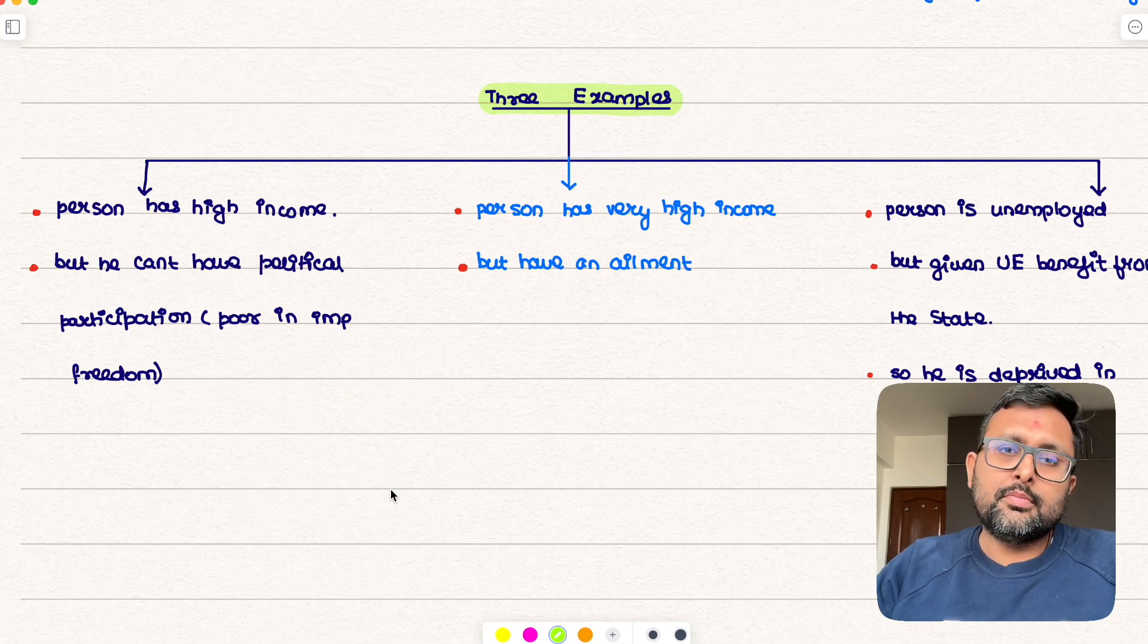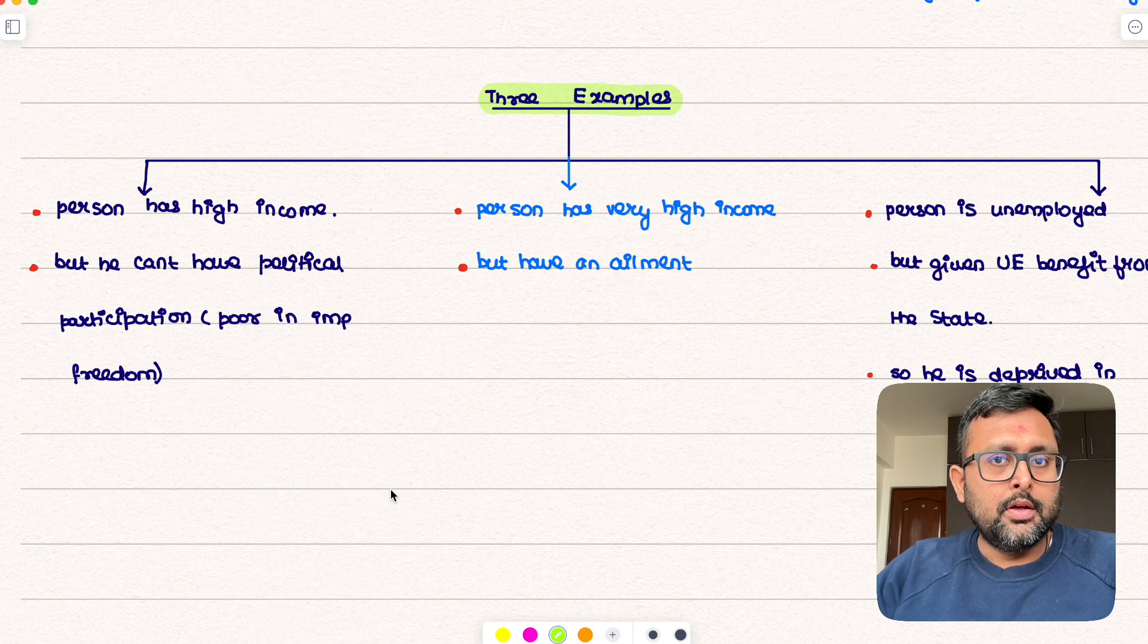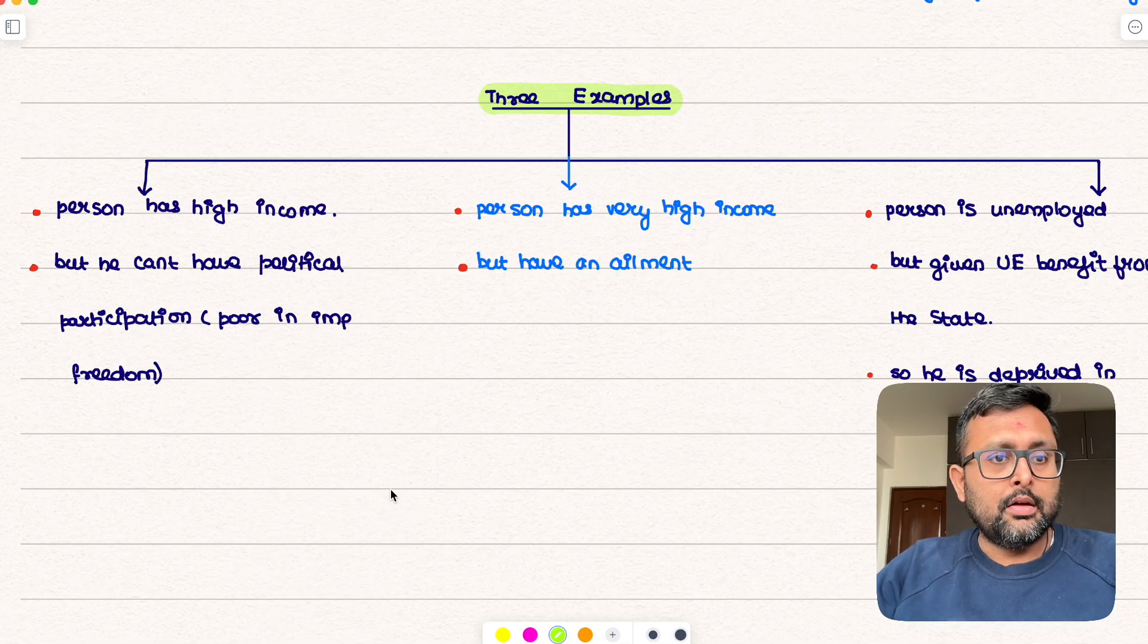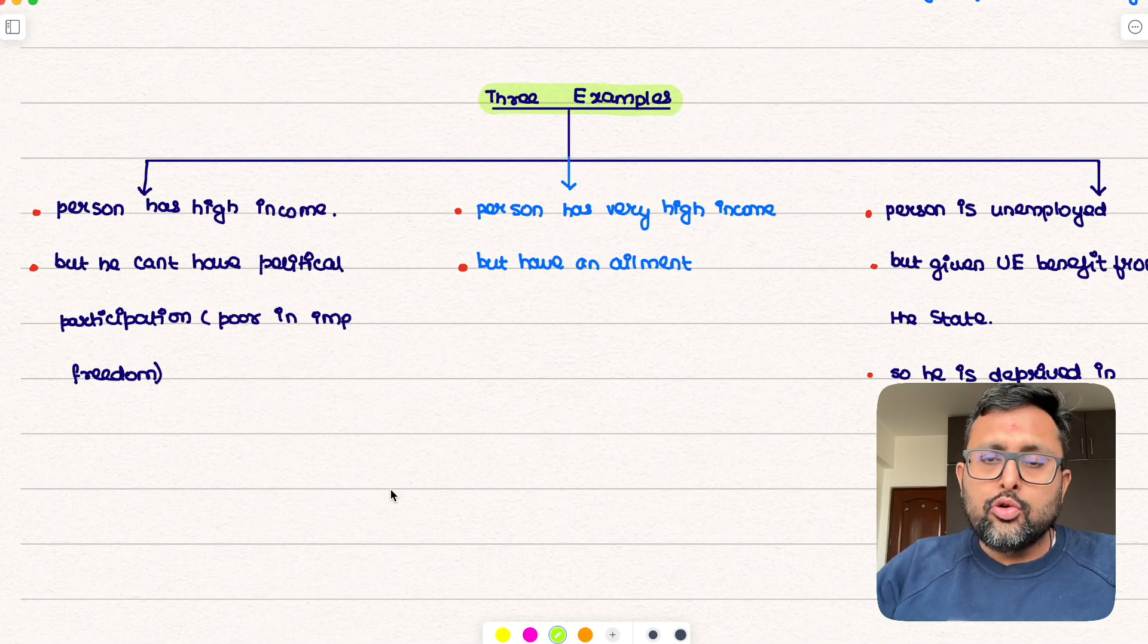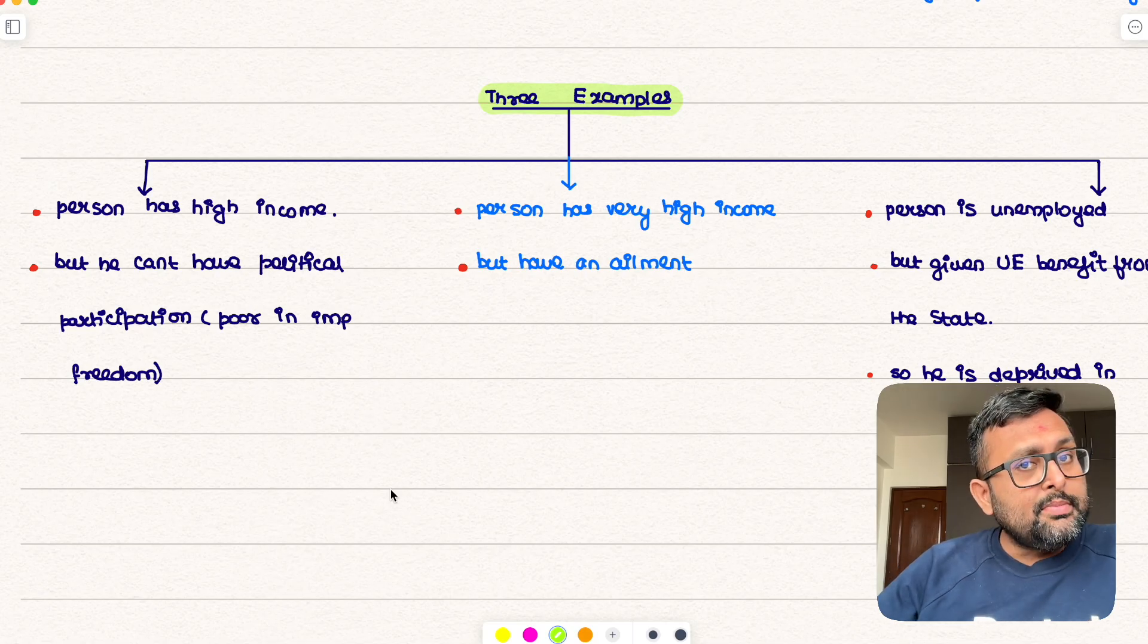But he doesn't have all the freedoms, he cannot participate politically in the political process. So tomorrow if government is going to say no, only a certain kind of individuals can vote, it's like they have taken our freedom from us, right? So that's not right. So although person might have more income but if he cannot participate politically, so he is poor in that kind of freedom. We are not accustomed of looking at those kinds of freedom, that is the problem.